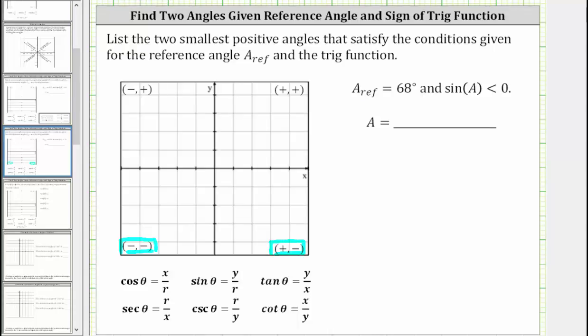So if the terminal side is in quadrant three, the terminal side would need to be this ray here, where again the reference angle is 68 degrees, which is this angle here, the angle between the terminal side and the x-axis.